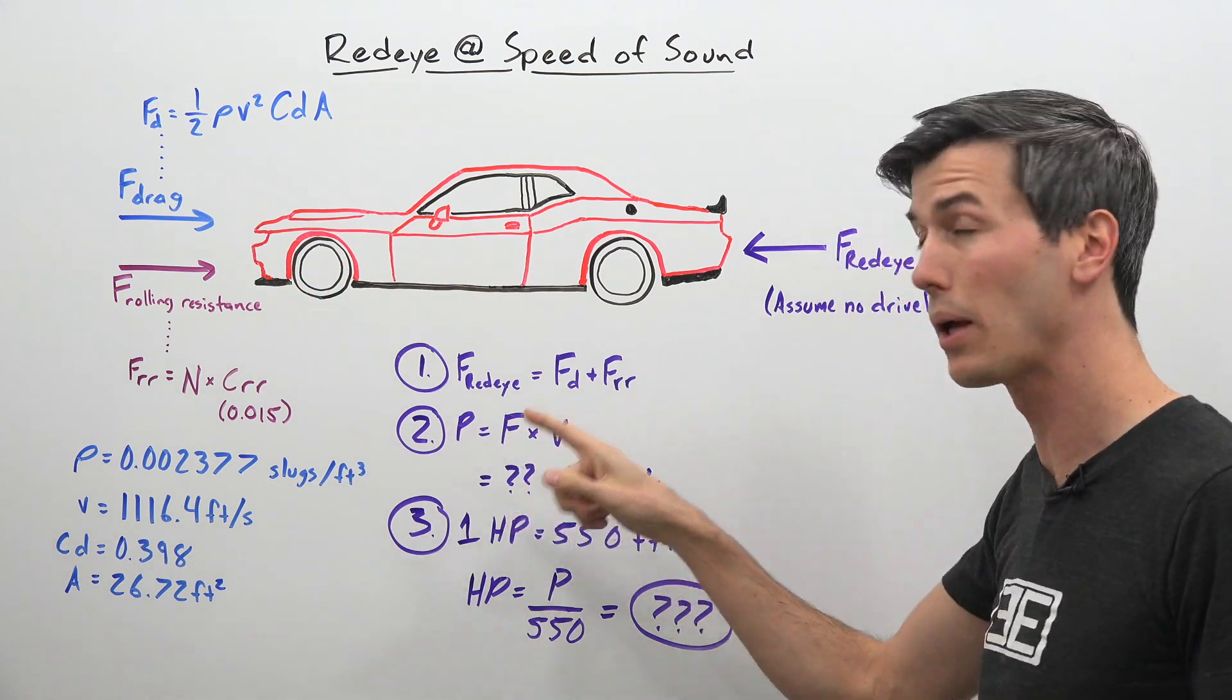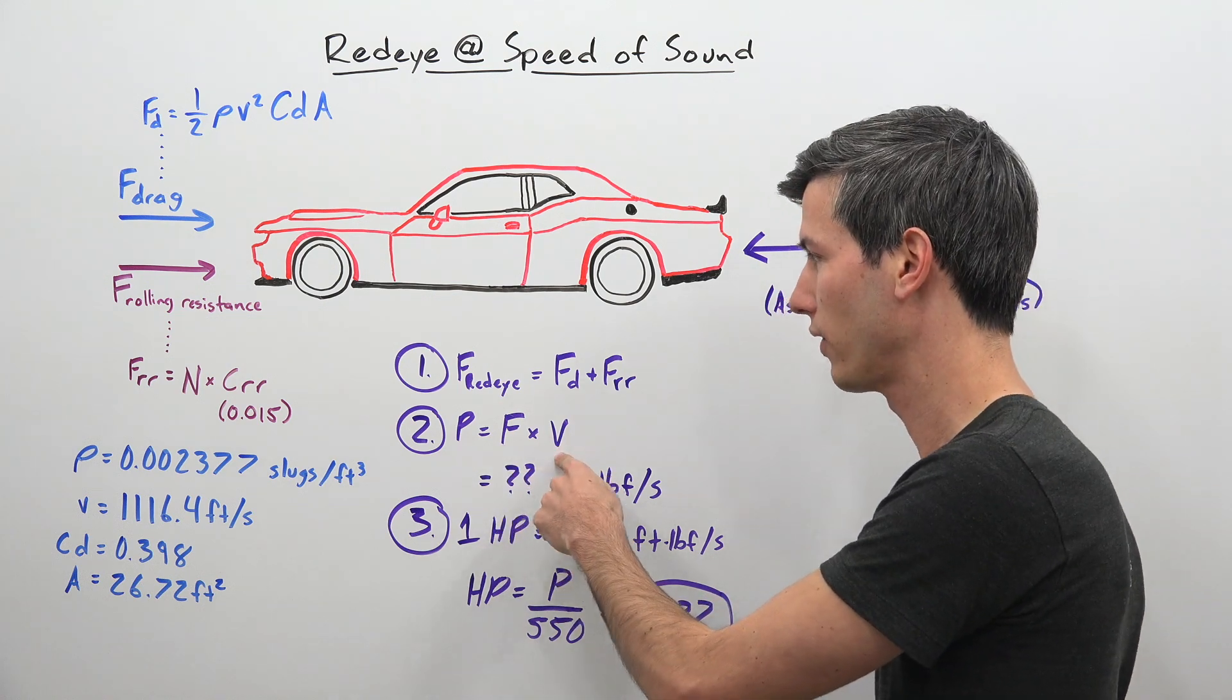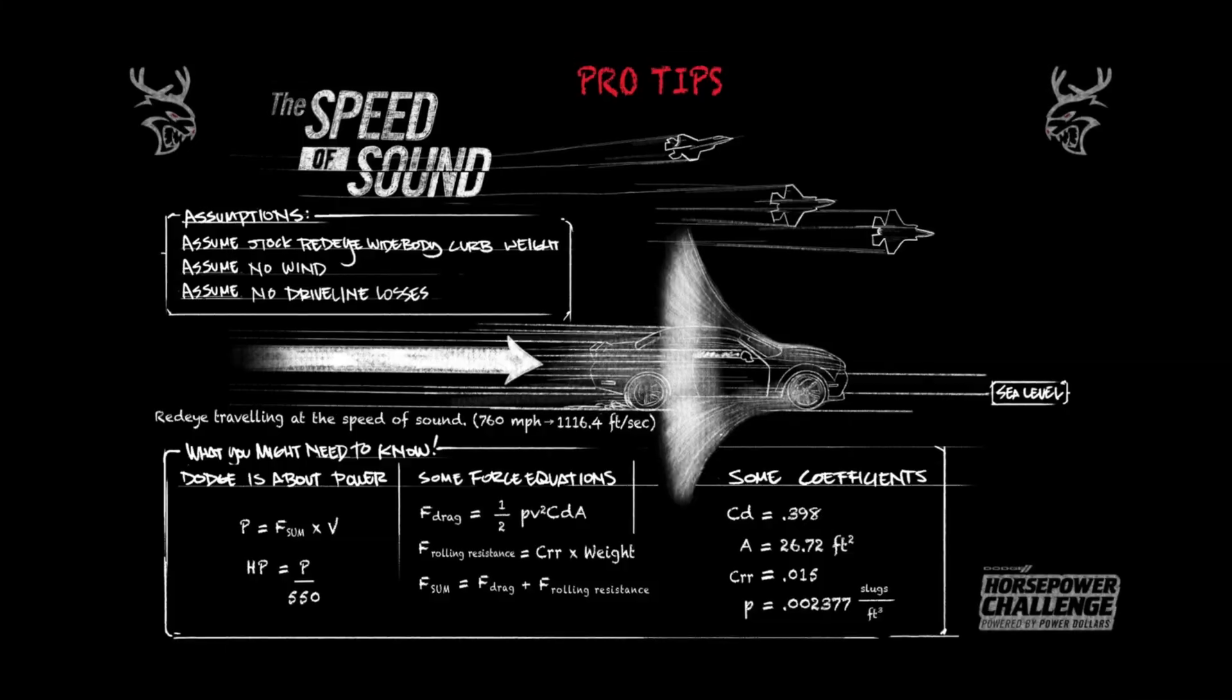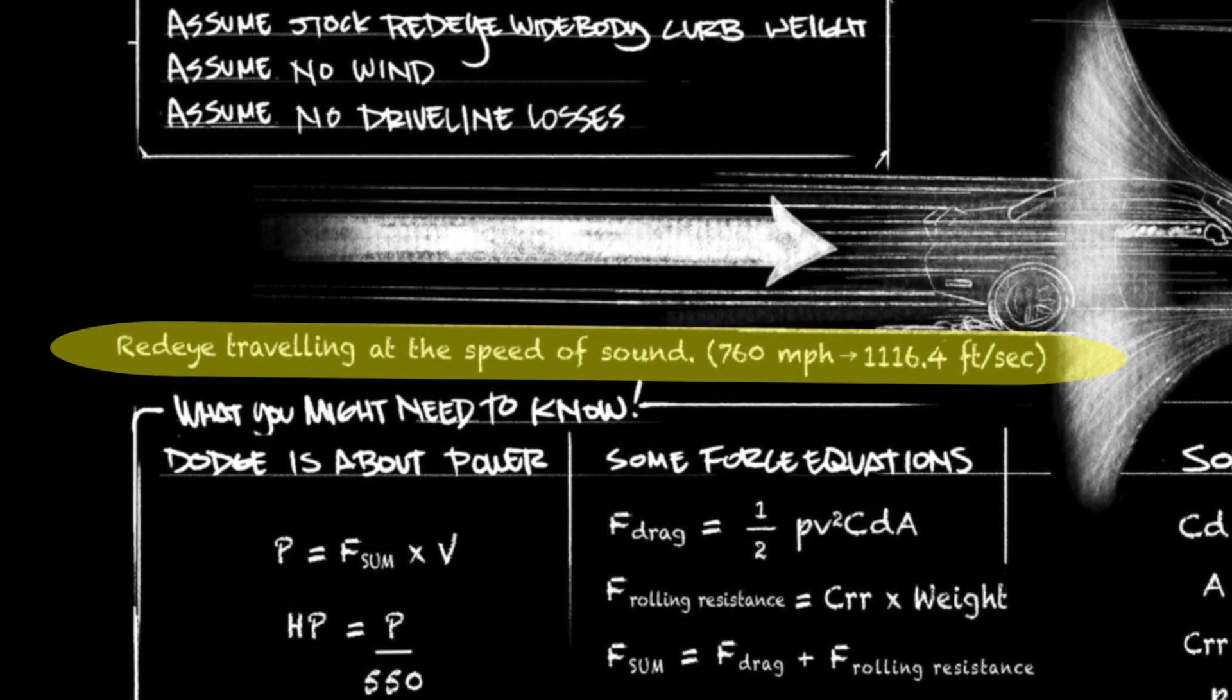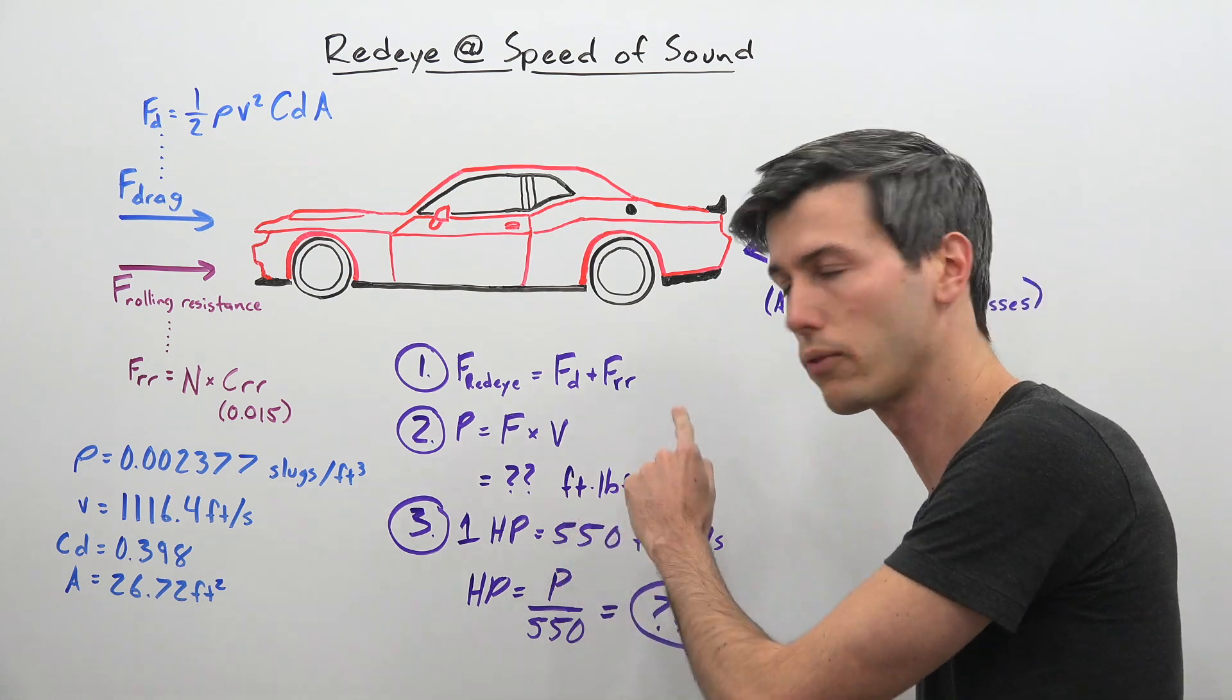Power is equal to force multiplied by velocity. We just calculated force. Velocity is 1116.4 feet per second. That's going to give us a number with units of foot-pounds force per second.